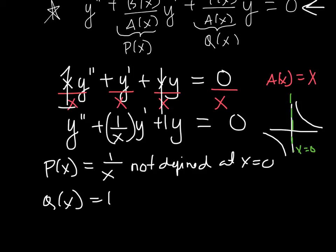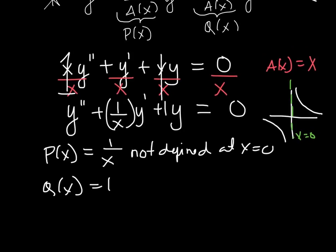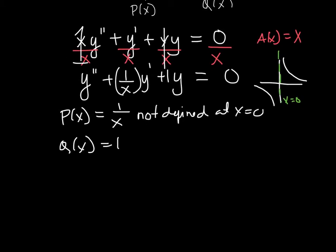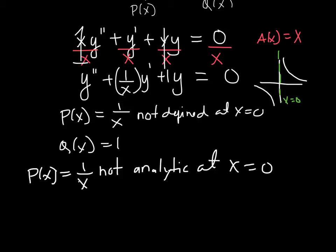Okay, so what does this tell us? Well, let's just move up a little bit. So here, let's go ahead and write P(x), which is our 1/x, is not analytic at x = 0, because it's not defined at x = 0, so it's not analytic.